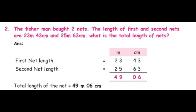While adding the centimeter column, 43 plus 63 gives us 106. But it has three digits — we split 106 as 100 plus 6, so we write only 6 in the centimeter column. That 100 centimeters is carried over and converted as 1 meter. So 1 plus 3 plus 5 equals 9, and 2 plus 2 equals 4 — that gives us 49 meters 6 centimeters. The total length of the net is 49 meters 6 centimeters.